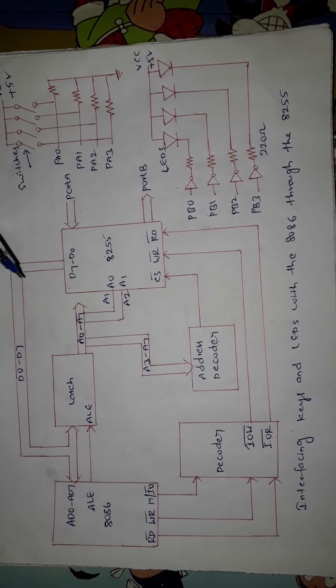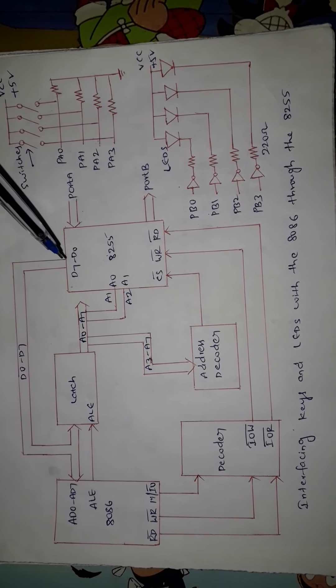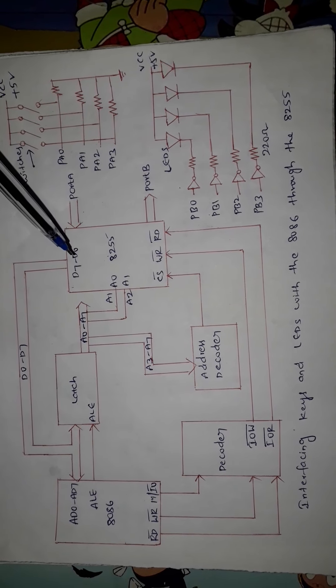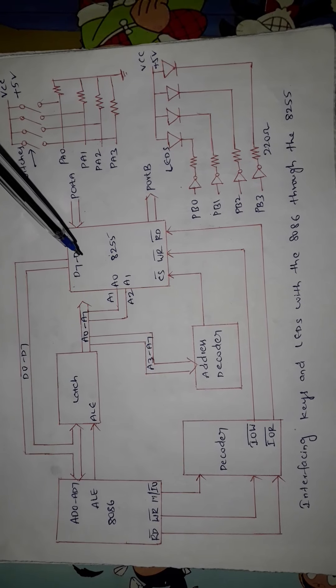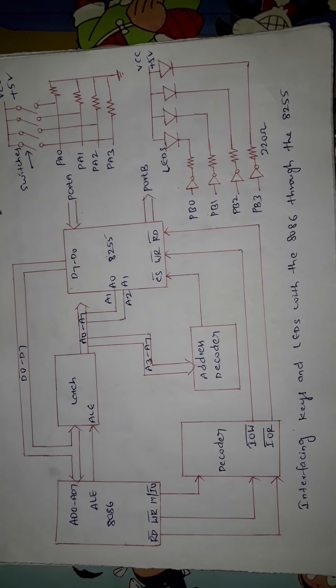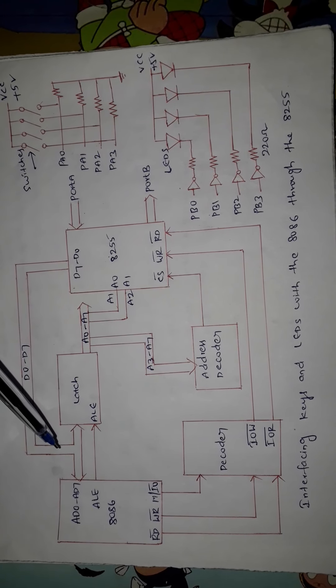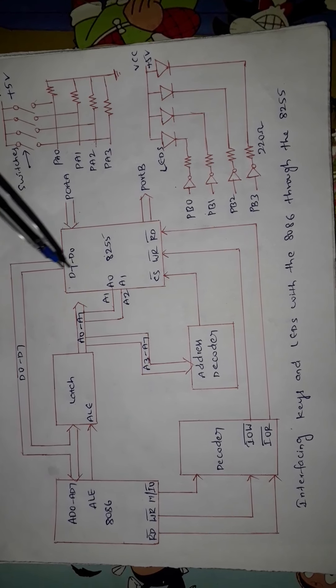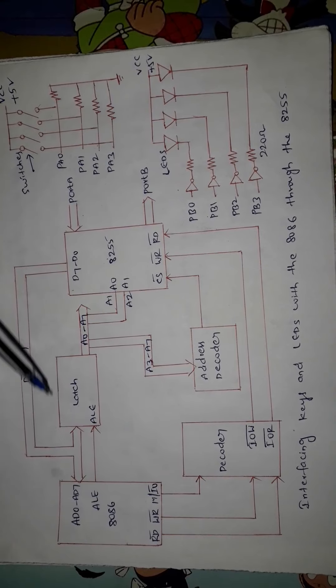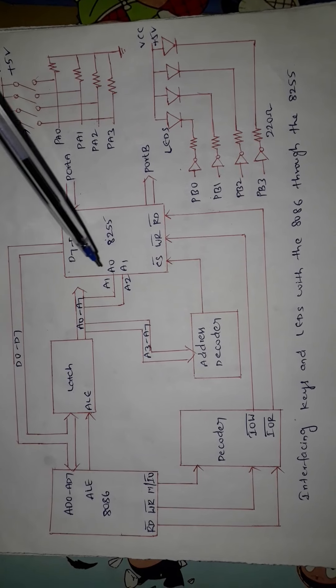Similarly, there is also data available on these data lines, which is transferred over the D0 to D7 pins connected to the D0 to D7 data pins of 8255. The 8255 can also transfer data from its ports back to the 8086, so the data transfer is possible in both ways. Hence the data bus shown here is bidirectional, meaning you can transfer data from 8086 to 8255 or from 8255 to 8086. The address stored on the latch is used for two different purposes.